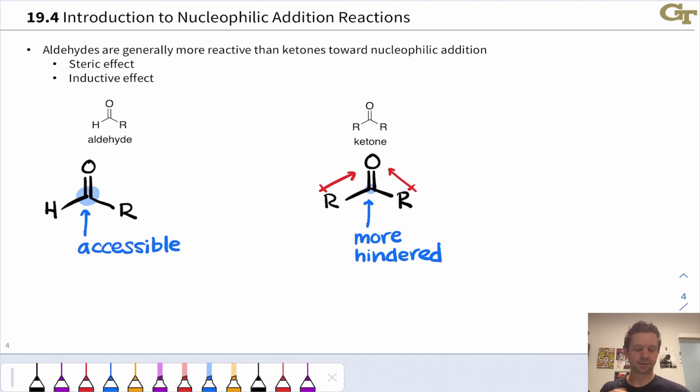The first is steric. H is smaller than a carbon group or hydrocarbon group, so the aldehyde carbon is more sterically accessible than the ketone carbon in general.